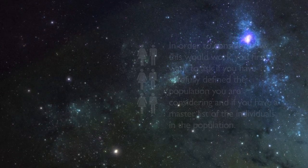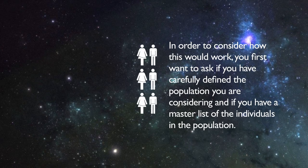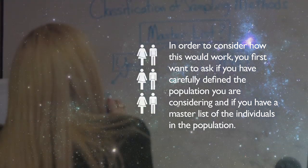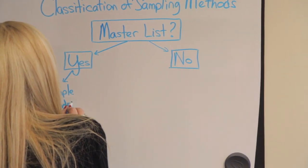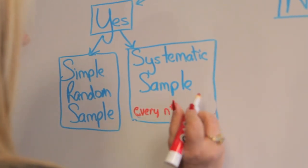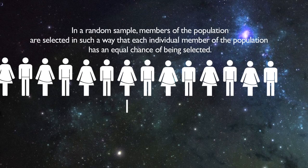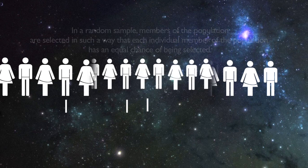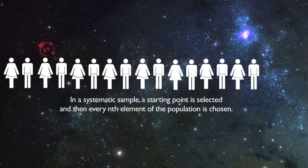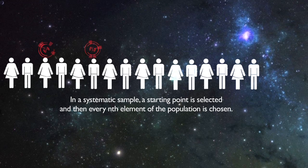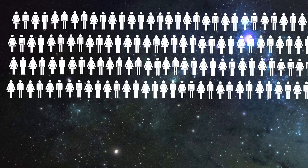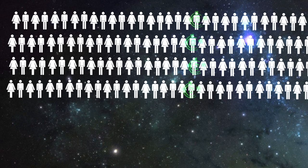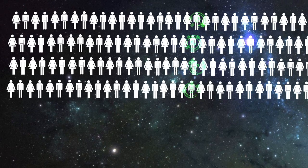To consider how this would work, first ask if you have carefully defined the population and have a master list of the individuals. If yes, you might choose a simple random sample or a systematic sample. In a simple random sample, each individual member of the population has an equal chance of being selected. In a systematic sample, a starting point is selected and then every nth element is chosen. For example, with a list of 1,000 employees, I might sample every 20th member from an arbitrary starting point to observe 50 employees.